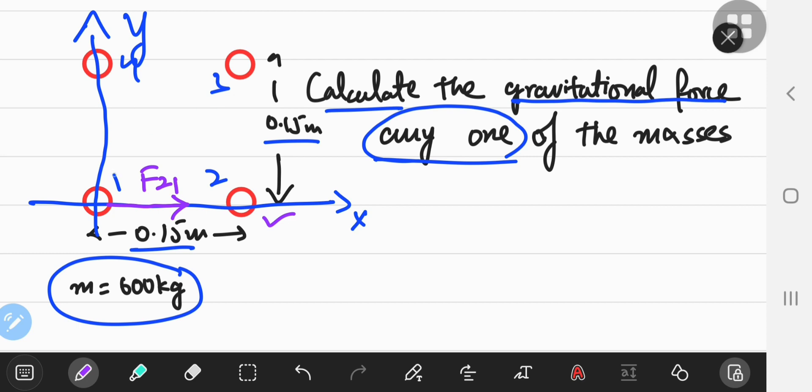Similarly, mass 3 exerts a force on mass 1 as F sub 3, 1, and by the same token, mass 4 exerts a gravitational force of attraction, F sub 4, 1. So the objective now is to calculate the resultant force, which is the vector sum of all these three forces.